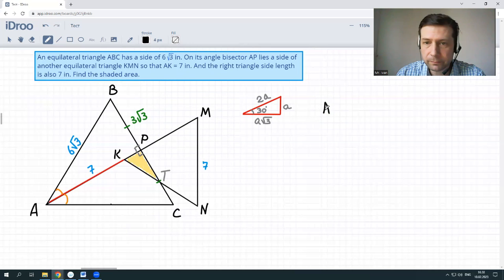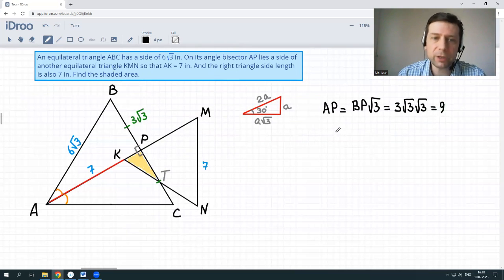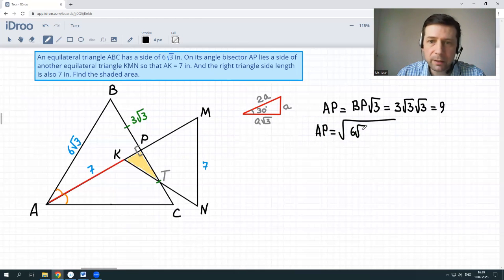So AP is equal to BP times √3, which is 3√3 times √3 is 9. So this way, or just by Pythagorean theorem. Another way to calculate, just to say AP is equal to square root and then 6√3 squared minus 3√3 squared. Also possible to calculate this way. You could check. It gives you the same answer exactly. It's 9. So now we know AP is 9.